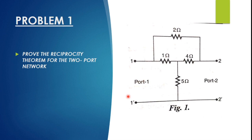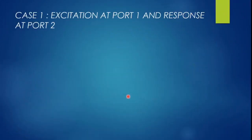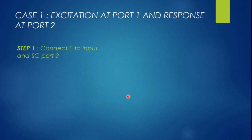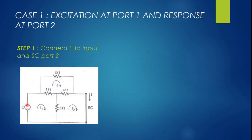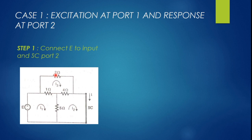In Case 1, we provide excitation at port 1 and measure the response at port 2. We connect the voltage source E to the input and short-circuit port 2 to measure the output. This is similar to a mesh analysis problem, so we assign three mesh currents I1, I2, and I3.